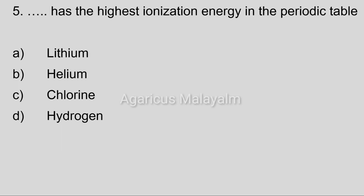Fifth question: Which element has the highest ionization energy in the periodic table? Option A: Fluorine. Option B: Helium. Option C: Chlorine. Option D: Hydrogen. Correct answer: Option B, Helium.